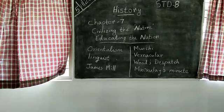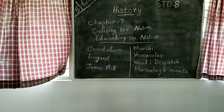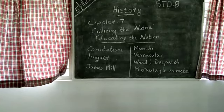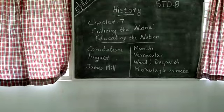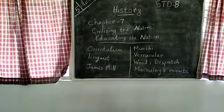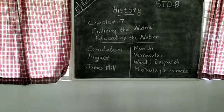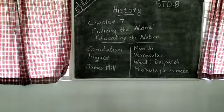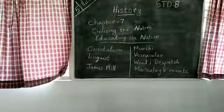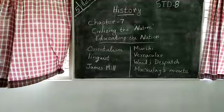Let's start with the tradition of Orientalism. In 1783, a person named William Jones arrived in Calcutta. He had been appointed as a junior judge in the Supreme Court set up by the Company. William Jones was a linguist — someone who knows several languages. He had studied Greek, Latin, English, French, Arabic, Persian, and Sanskrit.